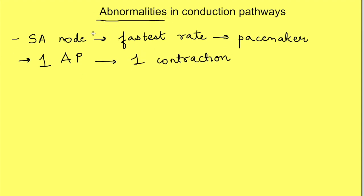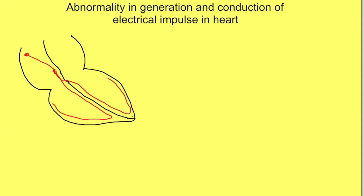Diseases may occur either due to abnormality in generation of impulse or in conduction of impulse or both. It's occurring at various levels. First, let's see the SA node. Diseases may affect SA node leading to decreased generation of nerve impulse and may cause severe bradycardia.